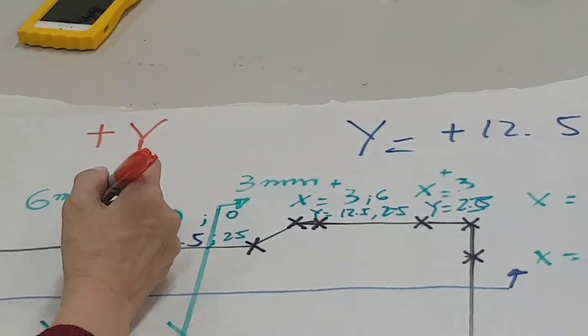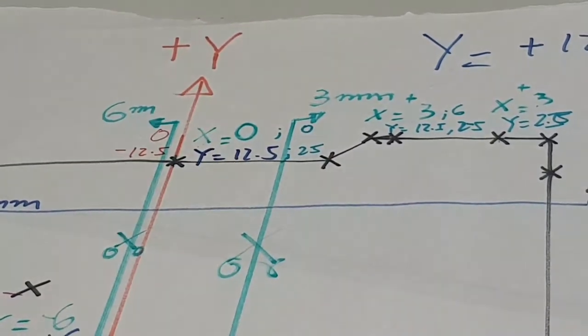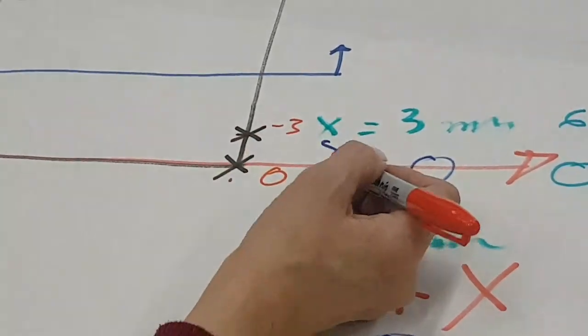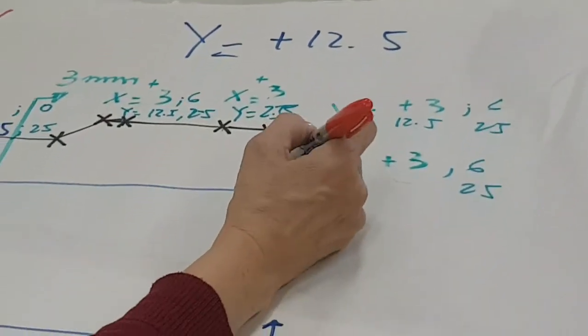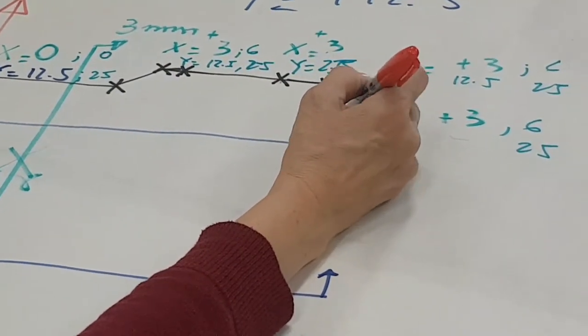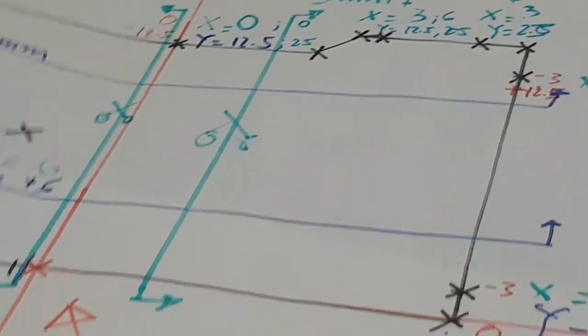So here will be X will be 0 and negative 12.5. Right. And then 3 will be negative 3 here and 0 here. It will be negative 3 and Y will be positive 12, negative 12.5. Right. Okay.